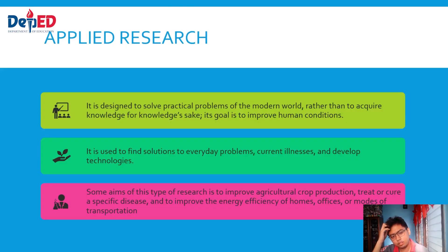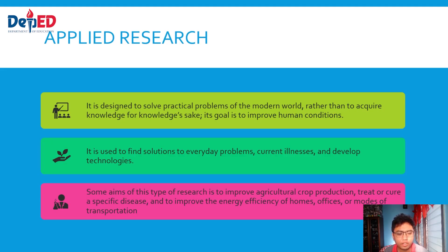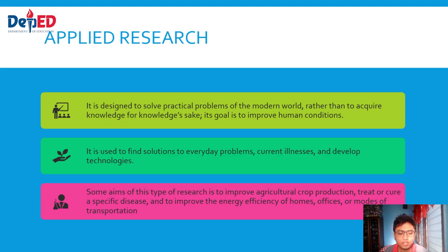First, we have applied research, which is designed to solve practical problems of the modern world rather than to acquire knowledge for its own sake. Its goal is to improve the human condition. It is used to find solutions to everyday problems, cure illnesses, and develop technologies. Some aims include improving agricultural crop production, treating specific diseases, and improving energy efficiency of homes, offices, or modes of transportation.